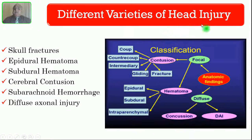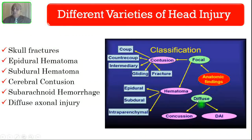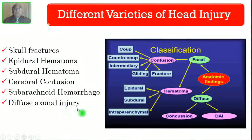There are different types of head injury. The injury may be focal or diffuse. Focal injury produces contusion — this may be coup or contrecoup injury, fracture, or focal hematoma, which may be epidural, subdural, or intraparenchymal. Diffuse injury includes concussion or diffuse axonal injury. The basic injuries to be discussed are skull fractures, epidural hematoma, subdural hematoma, cerebral contusion, subarachnoid hemorrhage, and diffuse axonal injury.